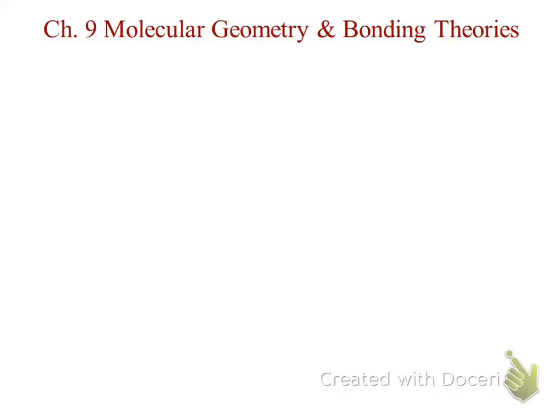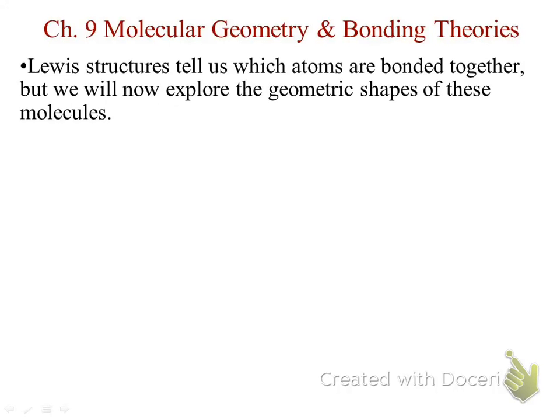Let's take it off from where we are. At the end of chapter 8, we left off talking a little bit about Lewis structures. We start to see how the valence electrons are bonded around the central atom and how other atoms are connected. These are starting to give us an idea of how it's arranged, but now we want to look at the actual molecular shape.